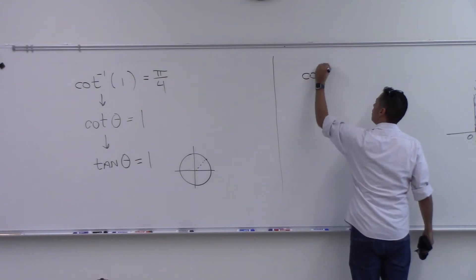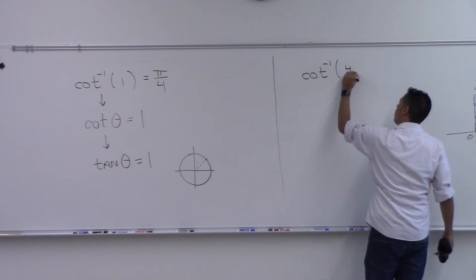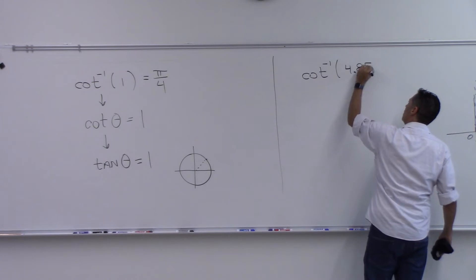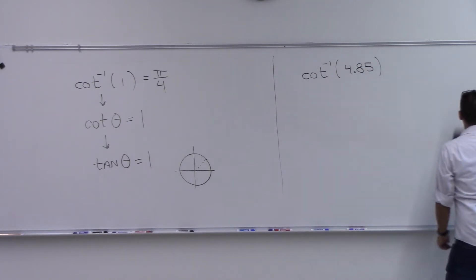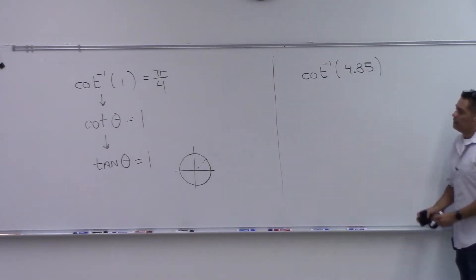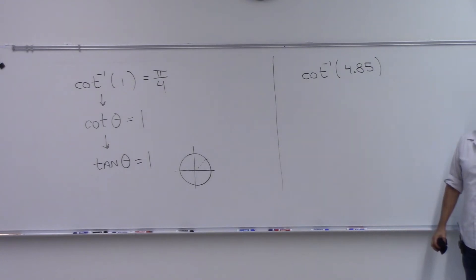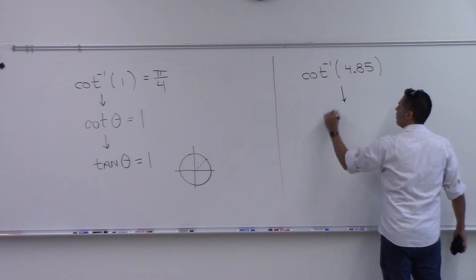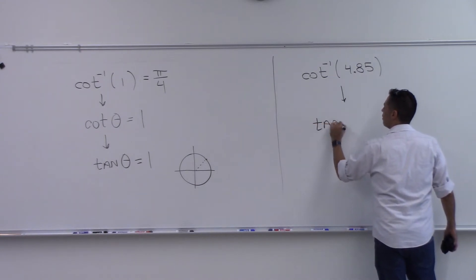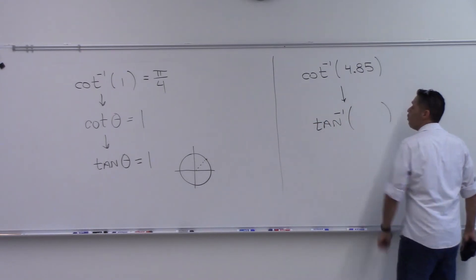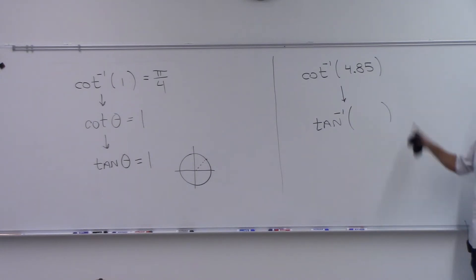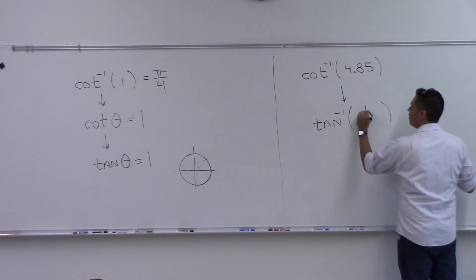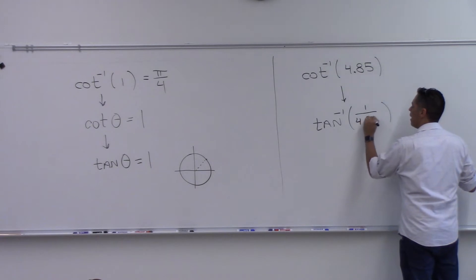What's cotangent inverse of 4.85? We don't have a cotangent inverse button on our calculators — we have tangent inverse. So this is really saying tangent inverse of something. You're going to need to find 1 divided by 4.85 and then take the tangent inverse of that.